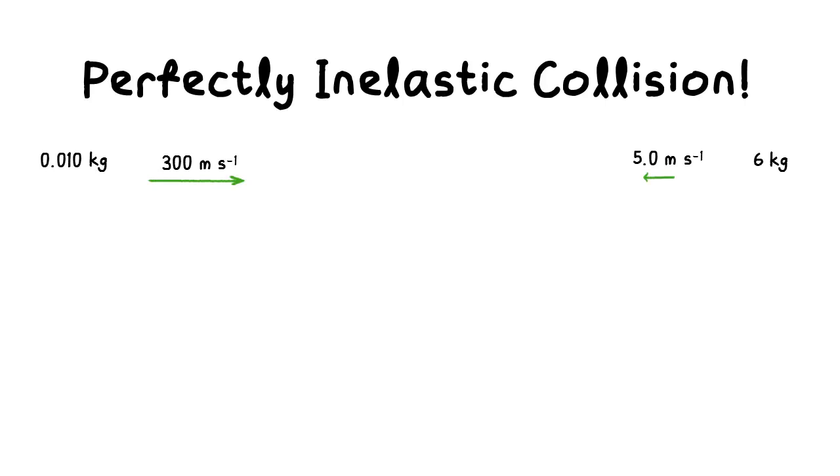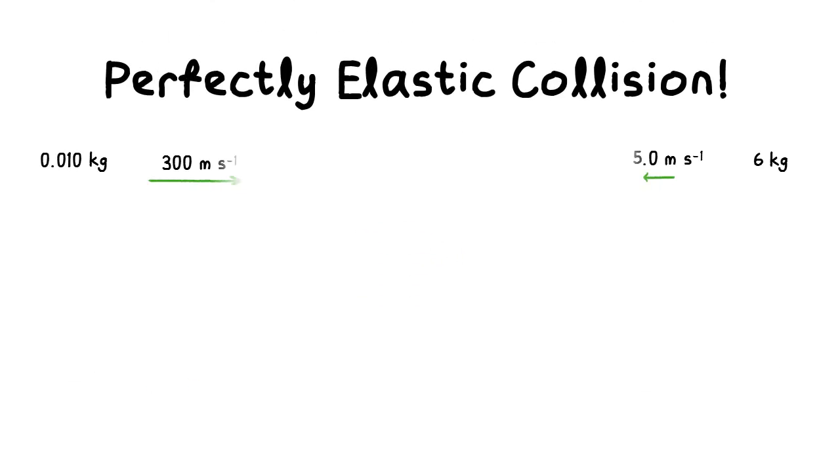For a completely inelastic collision, the bullet will be lodged in the bowling ball and turns back at 4.5 meters per second. For a perfectly elastic collision, the bullet will be rebounded at a speed of 309 meters per second.